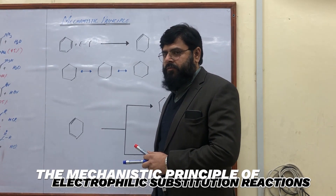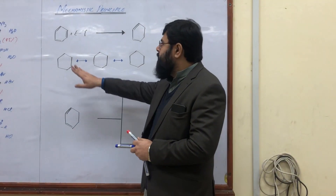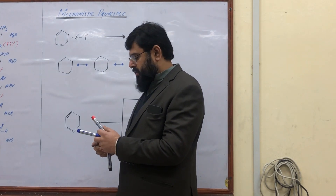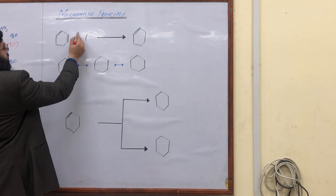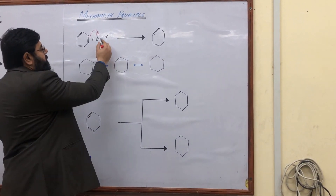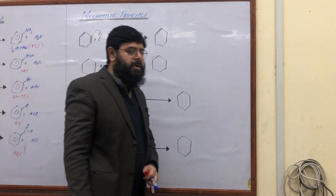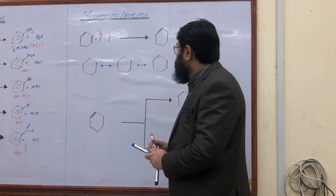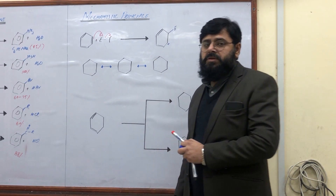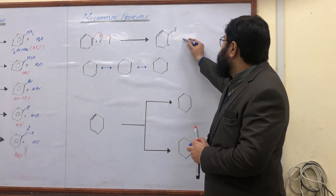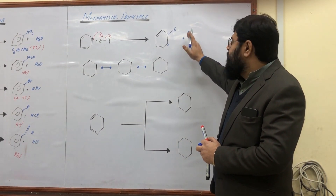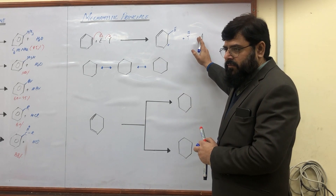The mechanistic principle of electrophilic substitution reactions is as follows. Taking an arbitrary example where E stands for an electrophile and Y for a nucleophile: the electrophile carries a partial positive charge, and benzene's electron density attacks this electrophilic part. The bond between E and Y is broken and the bond pair shifts to Y. The electrophile attaches to the benzene ring, creating a positive charge at one position, while Y leaves as a negatively charged entity.